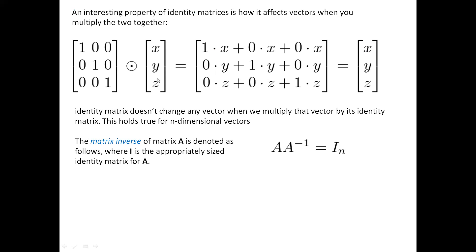An interesting property of the identity matrix is that if you multiply a vector by the identity matrix, you get the same vector. For example, [X, Y, Z] multiplied by the 3 by 3 identity matrix gives back [X, Y, Z]. The number of columns in the identity matrix must equal the number of rows in the vector being multiplied. An identity matrix does not change any vector when you multiply by it, and this holds true for n-dimensional vectors.